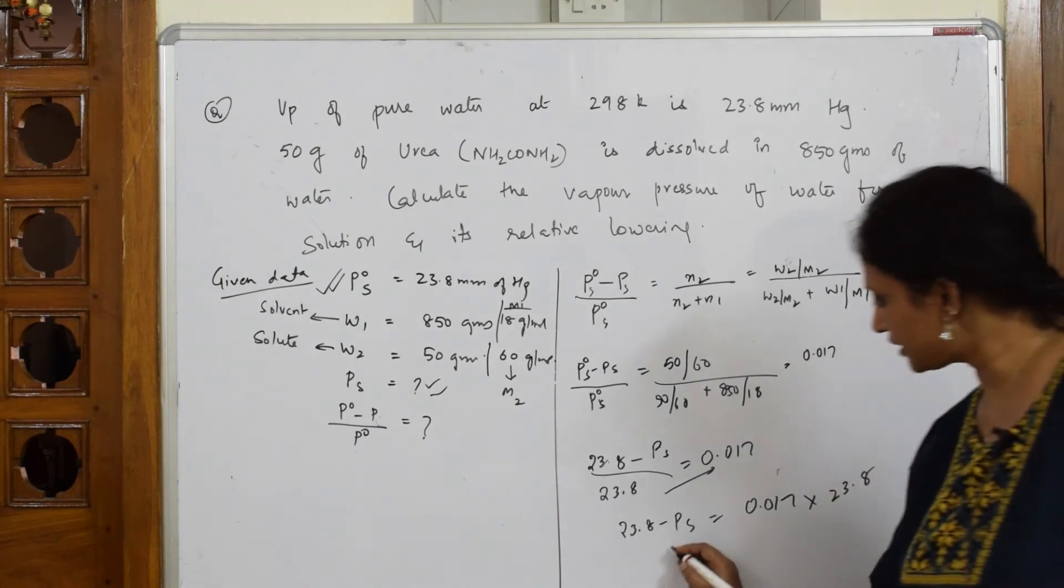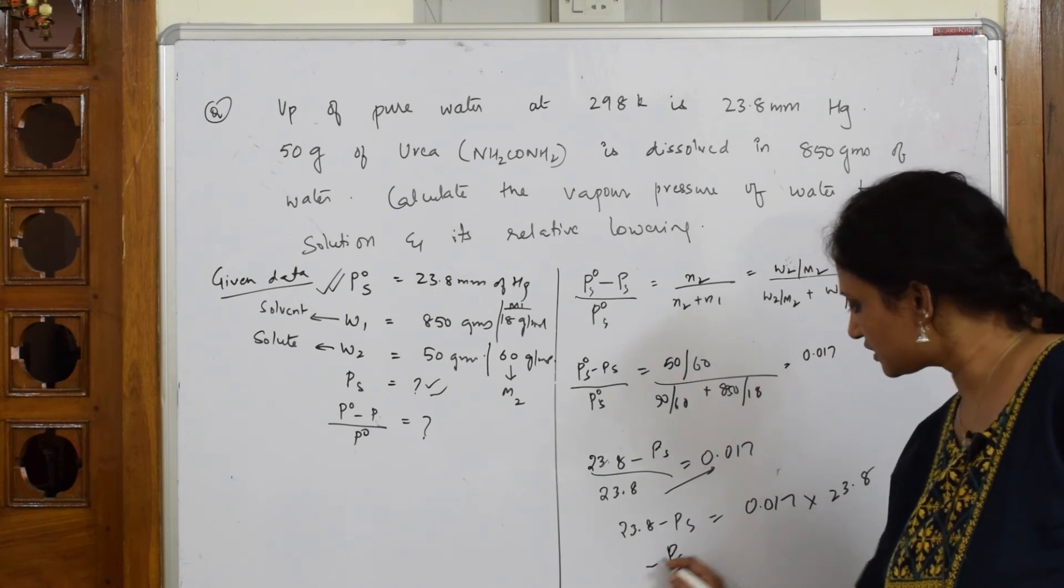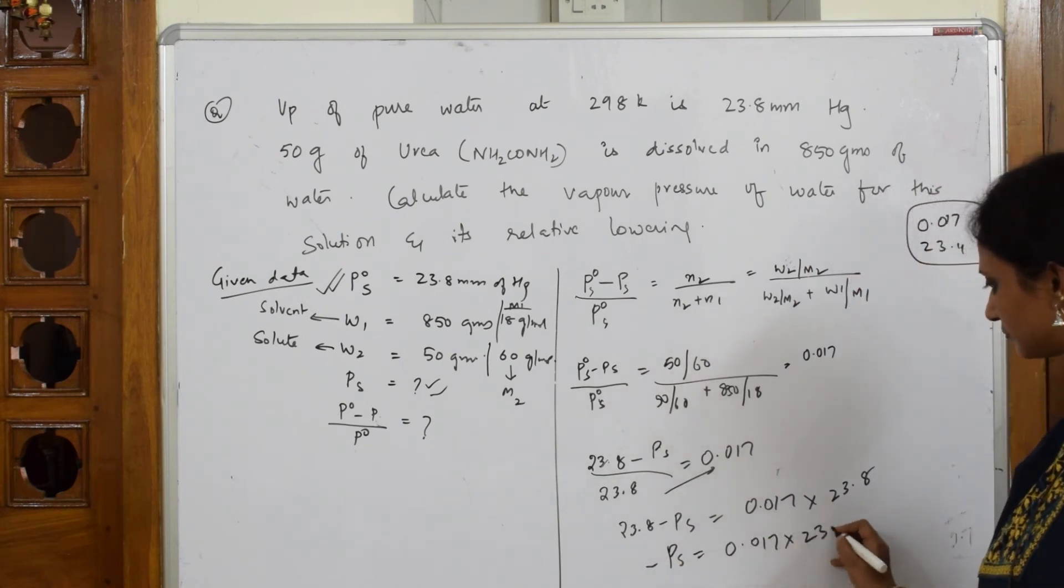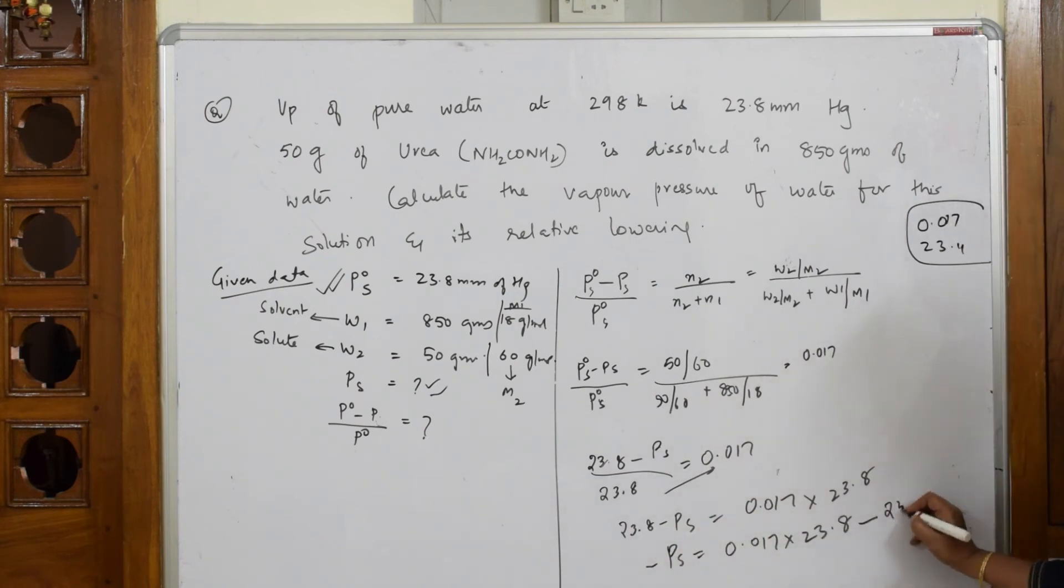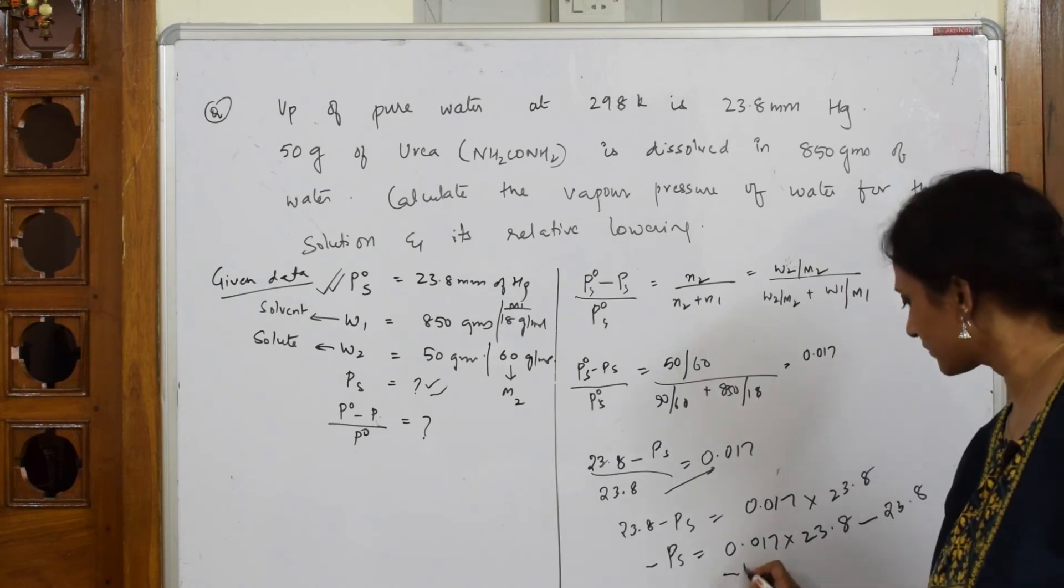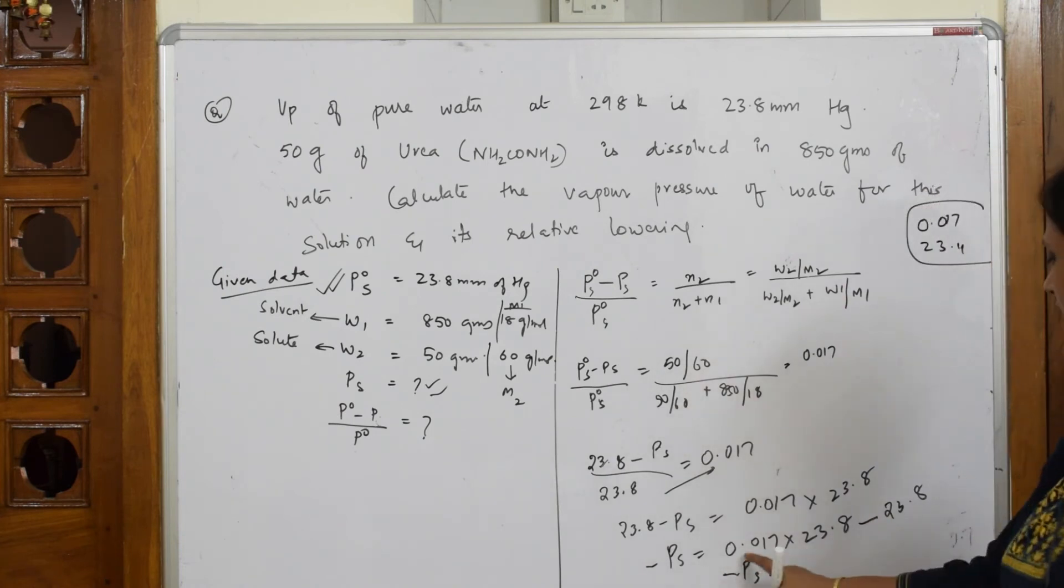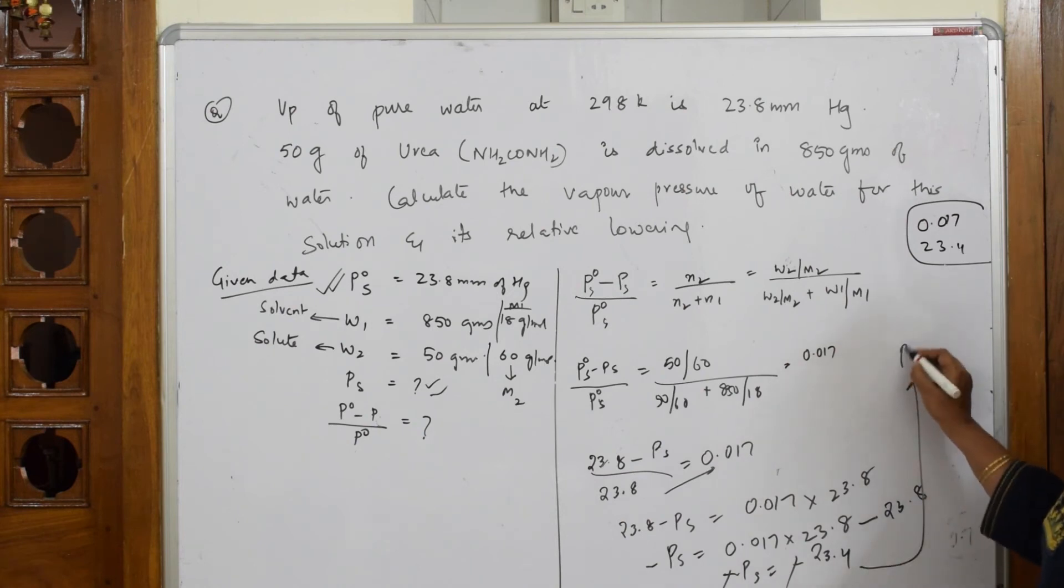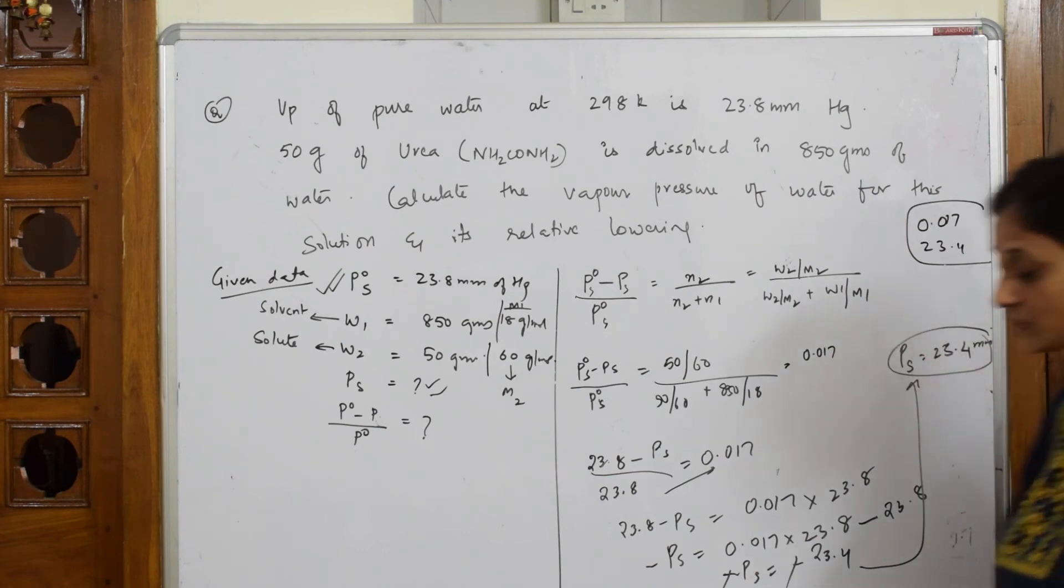I have to find PS, so 23.8 minus PS is equal to minus of... when I multiply all this, 23.8 times 0.017. When I solve this, minus PS, I get... I multiply all this and subtract, I get an answer of minus 23.4.